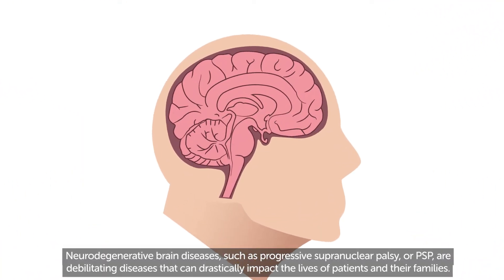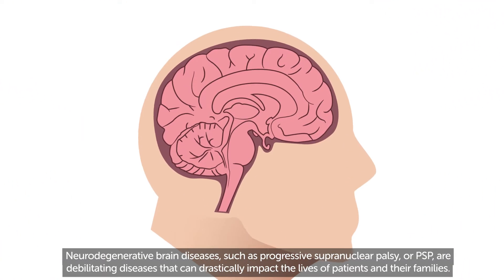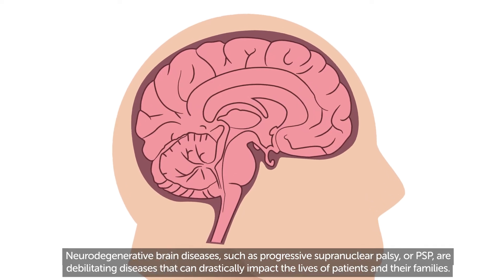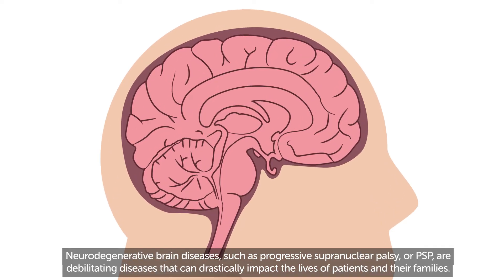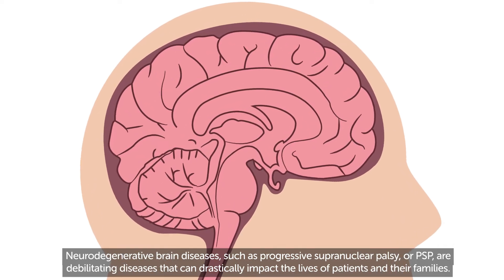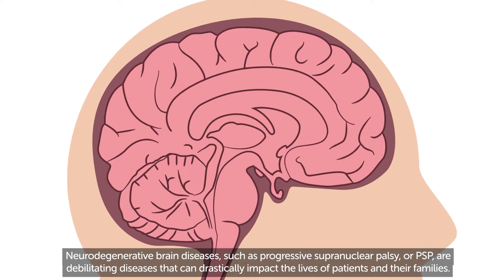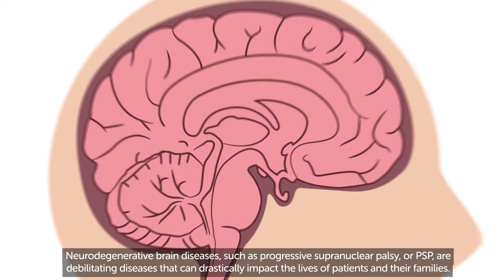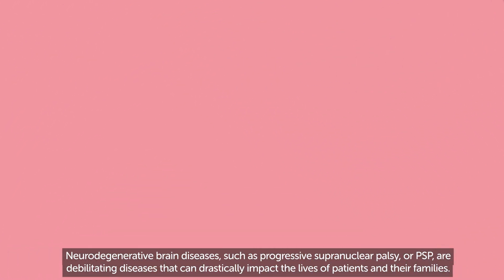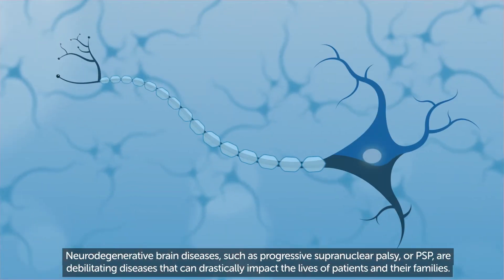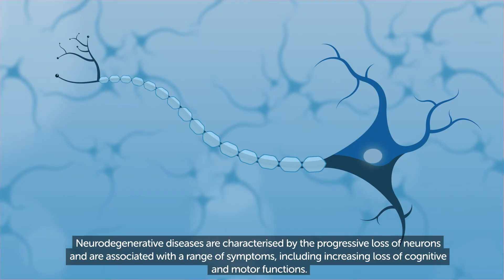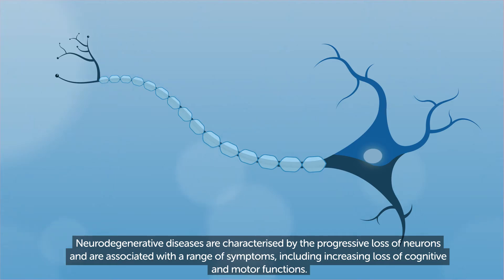Neurodegenerative brain diseases such as progressive supranuclear palsy, or PSP, are debilitating diseases that can drastically impact the lives of patients and their families. Neurodegenerative diseases are characterised by the progressive loss of neurons and are associated with a range of symptoms including increasing loss of cognitive and motor functions.